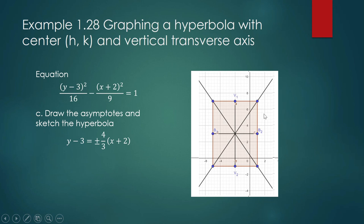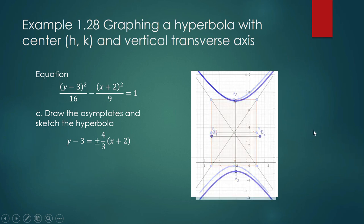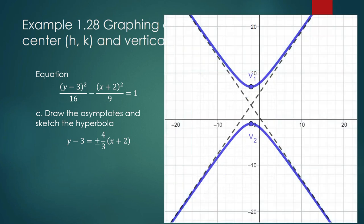My preferred way to sketch the hyperbola is to pay attention to the transverse axis and the conjugate axis — they define a rectangle. Draw lines through the opposite non-adjacent corners of that rectangle, and those two lines are your asymptotes. Starting from your vertex, trace the arms of your hyperbola following the direction of your asymptotes. The resulting graph shows the two branches of your hyperbola along with the two asymptotes.